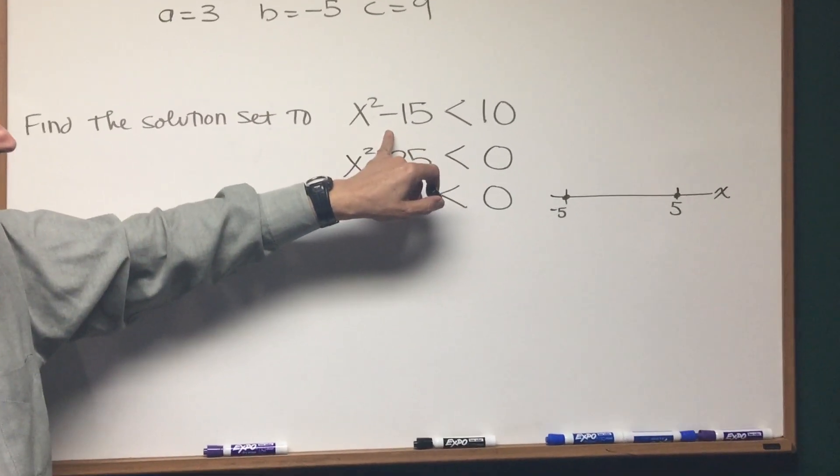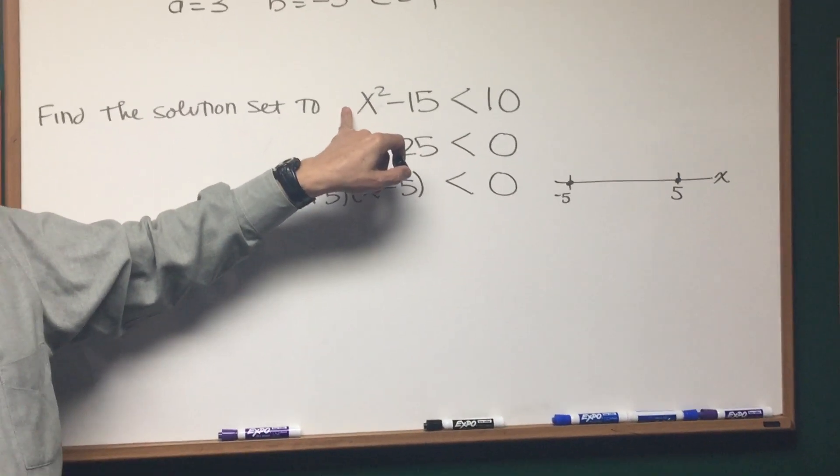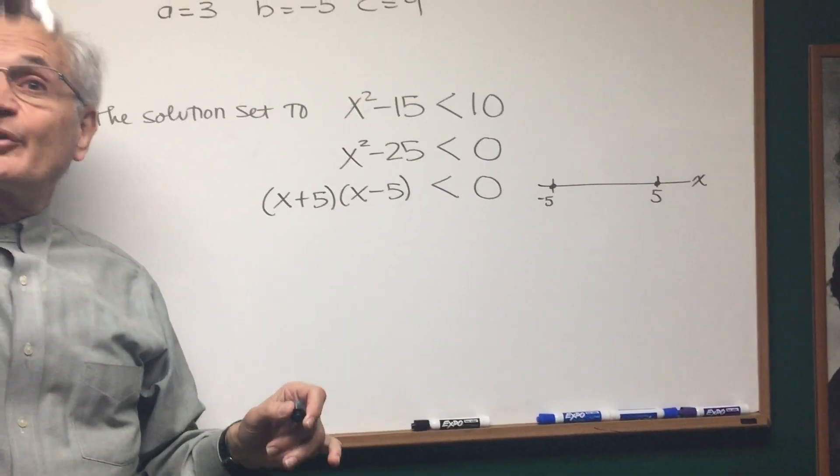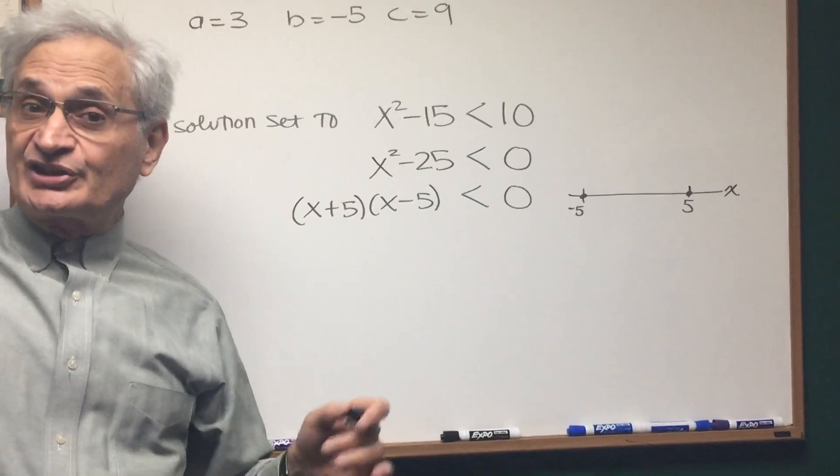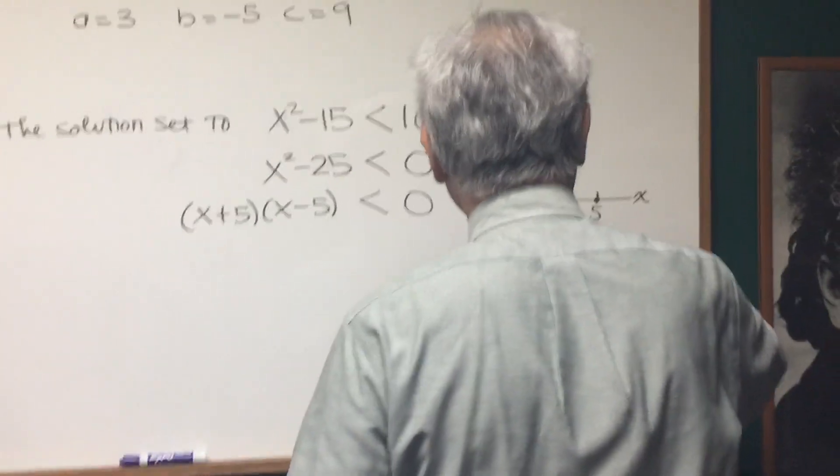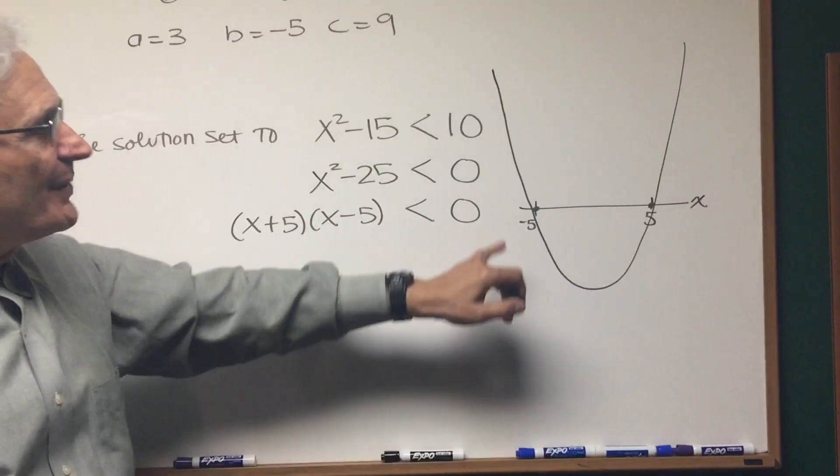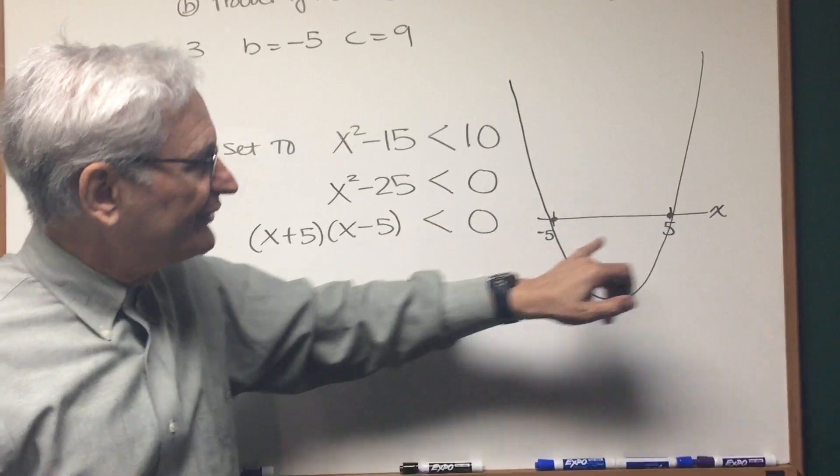Okay, we also know from, we should know from the original equation x² - 15, the leading coefficient is positive, therefore we should know that this is a parabola which is concave up. So the parabola that this draws very quickly, we'll make a very quick sketch, is a parabola, concave up, that passes through the x-axis at -5 and 5.